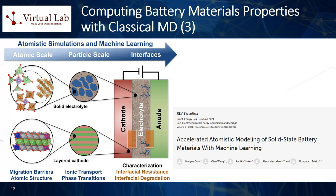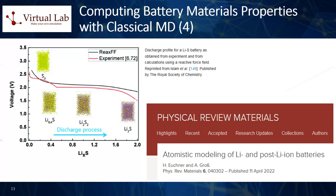Fourth, structural stability and mechanical properties: MD can simulate the response of a material to various stresses, allowing the study of its mechanical properties. This is useful for examining the structural stability of battery materials under operating conditions. Fifth, thermal properties: MD can be used to estimate the thermal properties of a material, like its thermal conductivity or specific heat capacity. This is important in the context of battery safety, as these properties can influence how a battery responds to thermal runaway conditions. Sixth, electrolyte behavior: MD is often used to study the structure and dynamics of liquid electrolytes, which is important for understanding ion transport and the stability of the electrolyte.